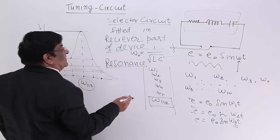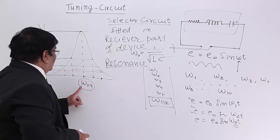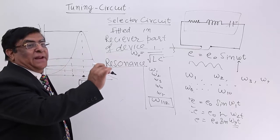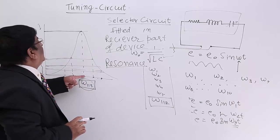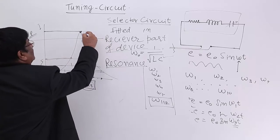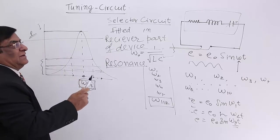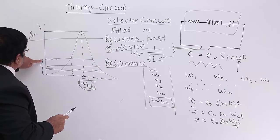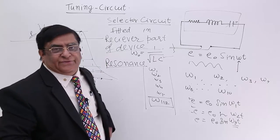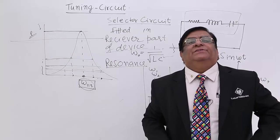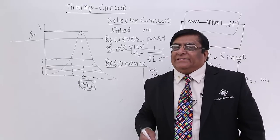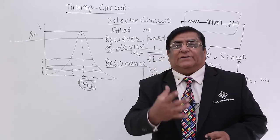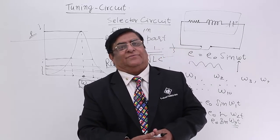Please remember: the tuning circuit is a selector circuit; it is fitted in the receiver part; and it works on the principle of resonance — resonance between the natural frequency of our device and the frequency which is supplied. If these two are not equal, the high current will not be obtained, and we need this current for ringing, for picture, and for sound. If current is less than this threshold, there will be no sound and no picture. In the next lecture we will see what is the fineness of tuning, what is the quality of tuning, and we will study the quality factor. Thank you.